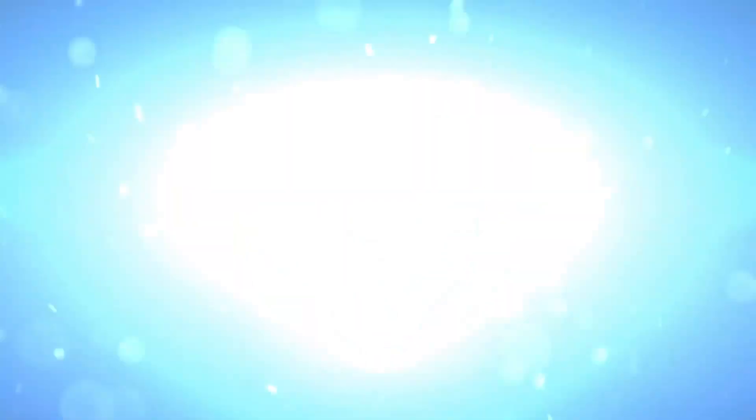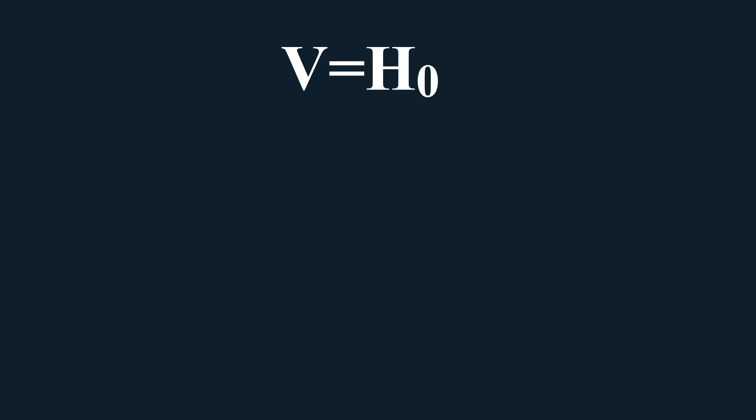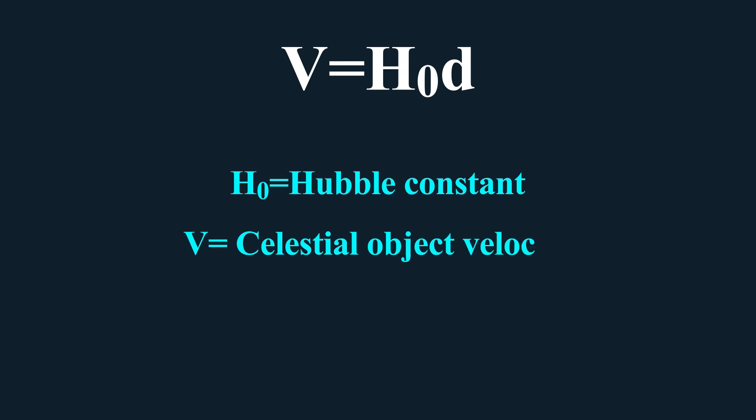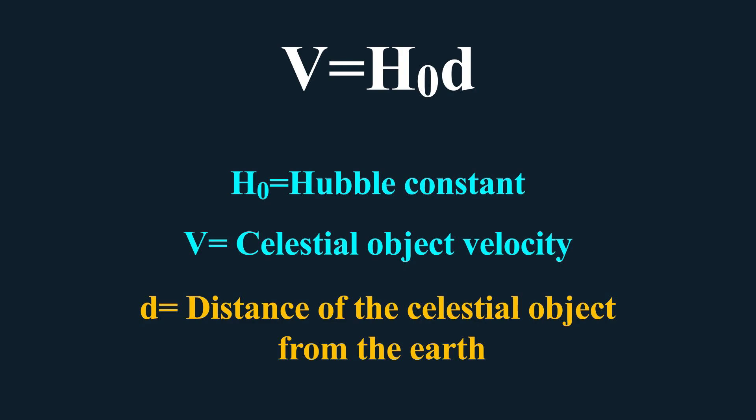Method 3: As you know, the universe is expanding and over time, a celestial object is moving far away from the supposed center of the universe, and according to the Hubble formula, V equal to H0D.